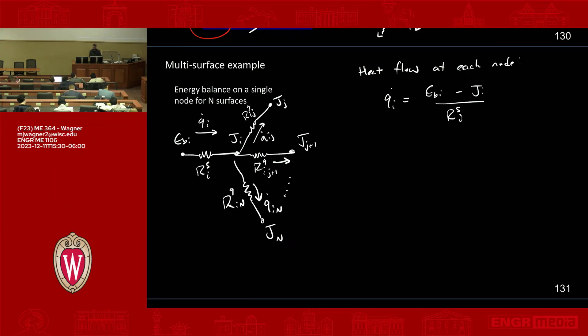That's capturing this effect here, this bit of the resistance. So I know that the heat transfer Q dot I is related to the black body and radiosity over the surface resistance.